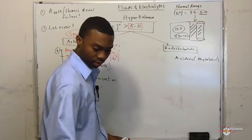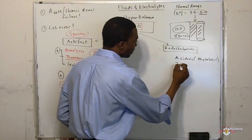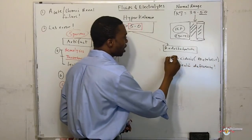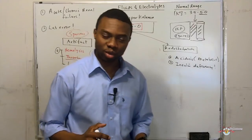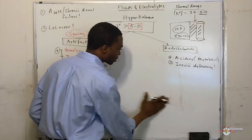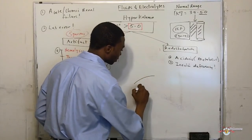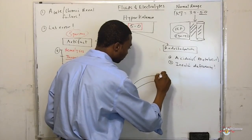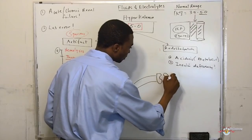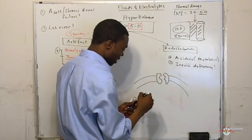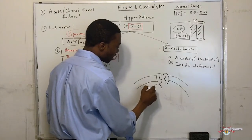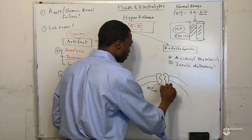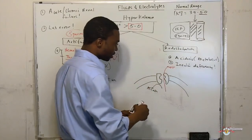The next letter is I — for insulin deficiency. How does insulin work? Here's a muscle cell. Inside the muscle cell we have the sodium-potassium ATPase pump. This pump's job is to pump out sodium and bring in potassium.